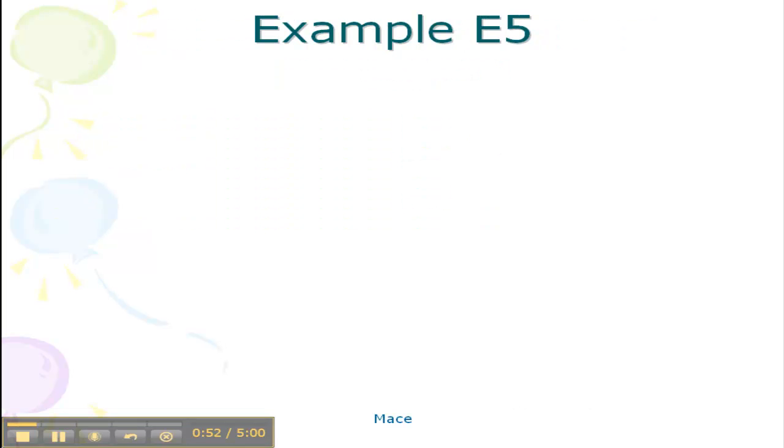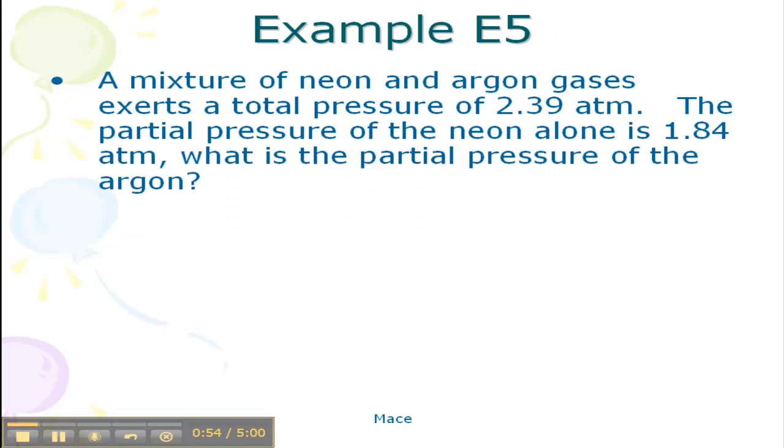So this is an example that you have on your sheet that you got in class, so cut this out, put it in your notebook, and solve it. A mixture of neon and argon gases is going to exert a total pressure of 2.39 atm. The partial pressure of the neon alone is 1.84 atm. What is the partial pressure of the argon?